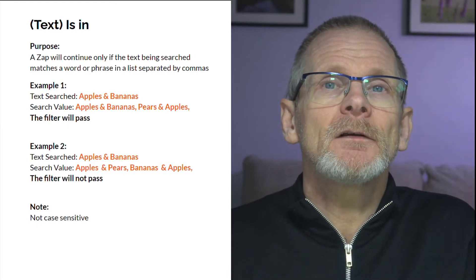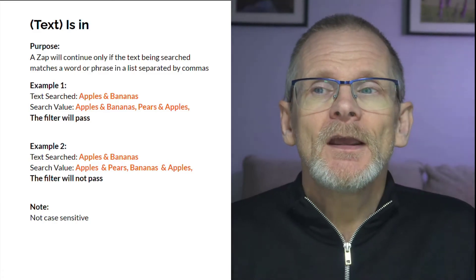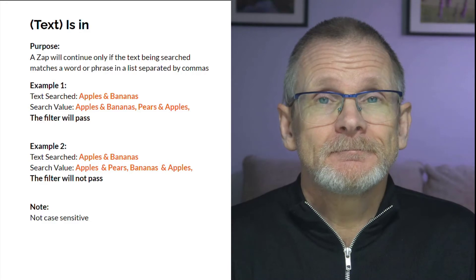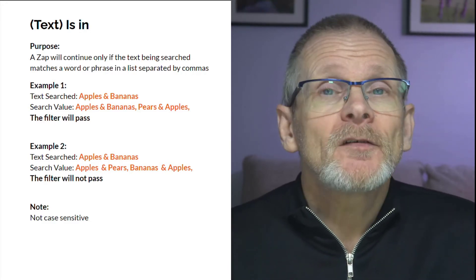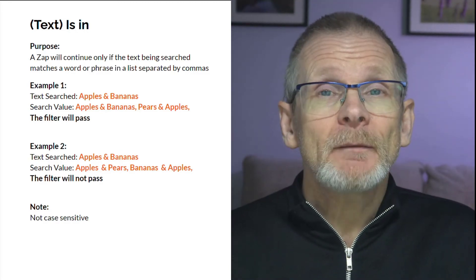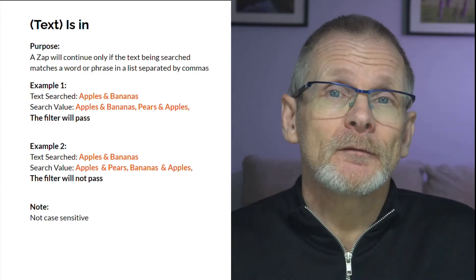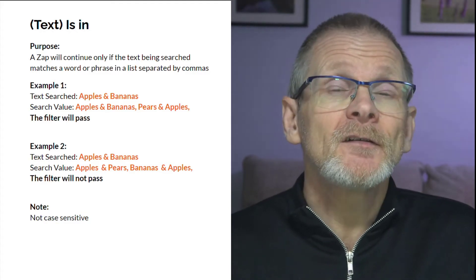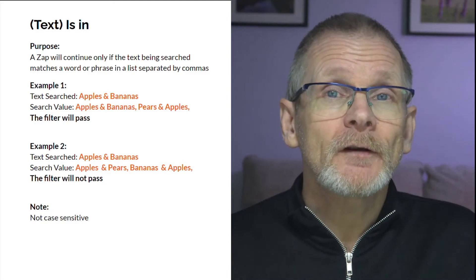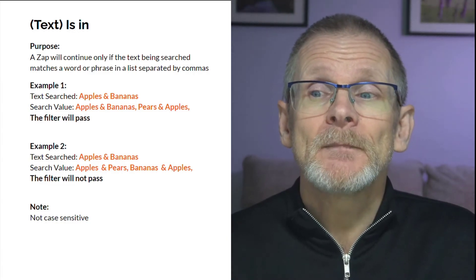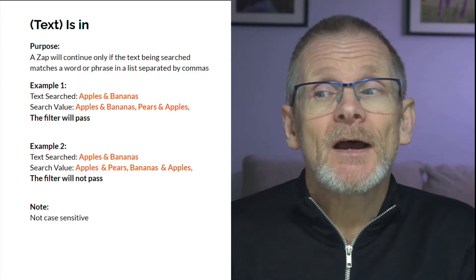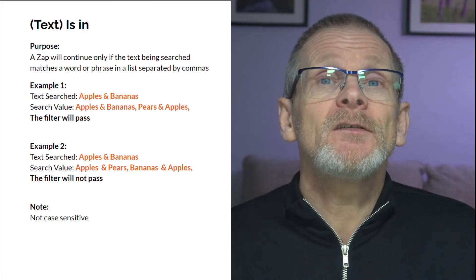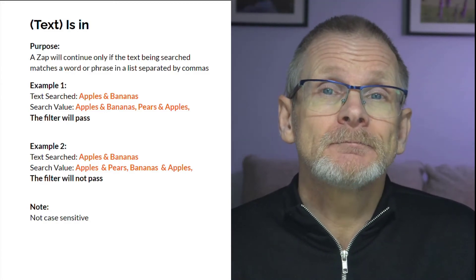'Text is in' is slightly more complicated. The Zap will continue only if the text being searched matches a word or phrase in a list that we provide, separated by commas. In example one, the text is 'apples and bananas' and our comma-separated list contains 'apples and bananas' and 'pears and apples' — the filter passes because the text appears in the list. In example two, the list contains 'apples and pears' and 'bananas and apples', so the filter won't pass because neither matches. Not case sensitive.